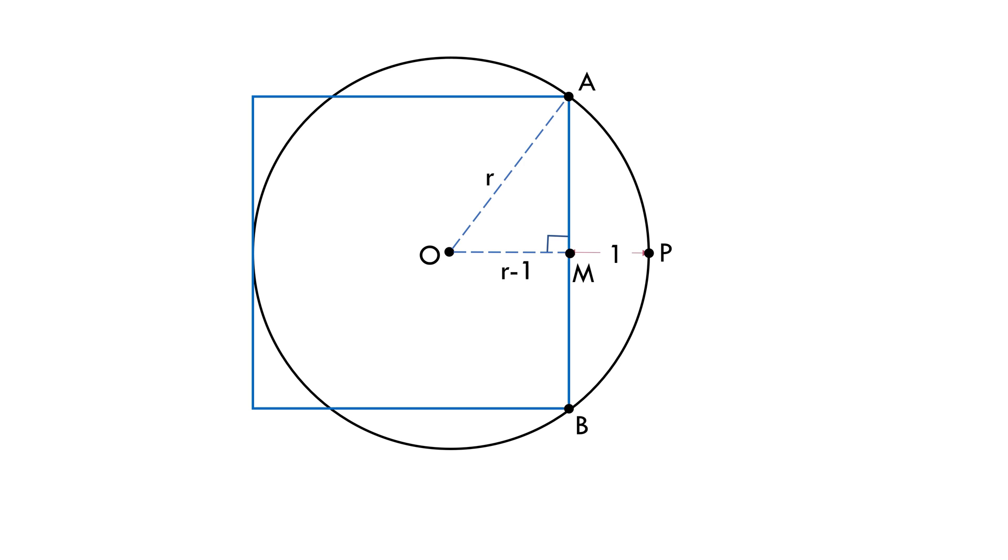Let's assume that S is the side length of the square. Because OM has been drawn perpendicular to AB, OM bisects AB and AM equals MB equals S by 2. Now we can see that a right angle triangle AOM has been formed.